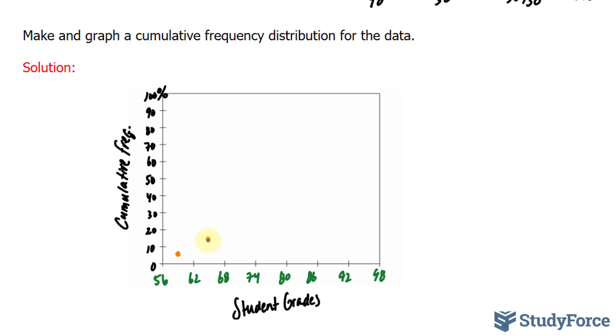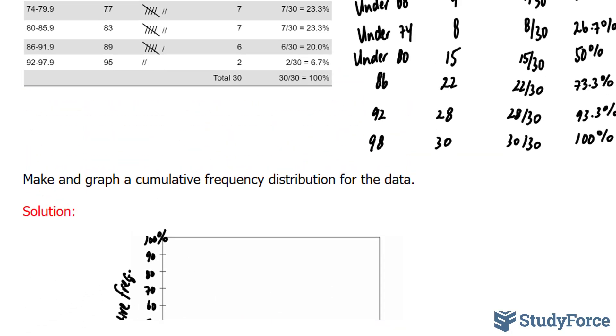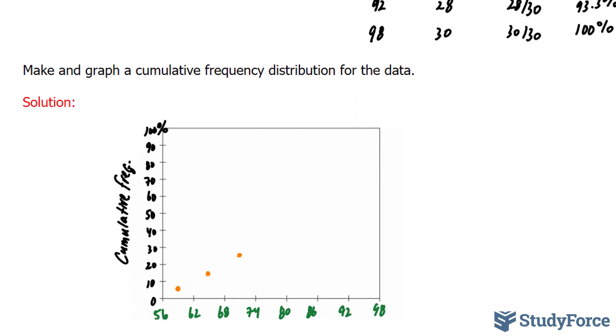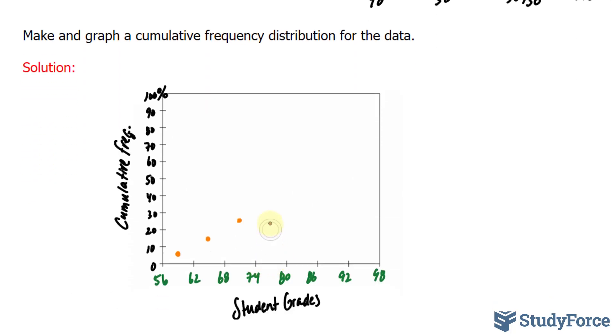Next was under 74. That represents 26.7%. So in between these two. The next one was under 80, and that was 50%. So between these two, I'll plot 50%.